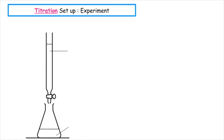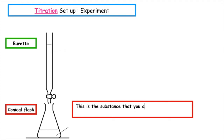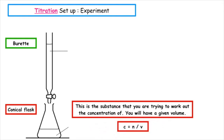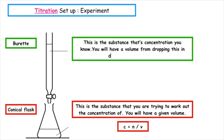A titration is the technique that we use to calculate the concentration of an unknown. The two pieces of apparatus that we'll use are a burette and a conical flask. The substance you're trying to work out the concentration of is found in the conical flask, and you'll have a given volume from the question, so the calculation we use is C = N/V. In the burette, this is the substance whose concentration you know, and you use N = C × V.